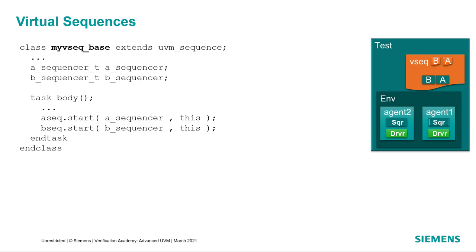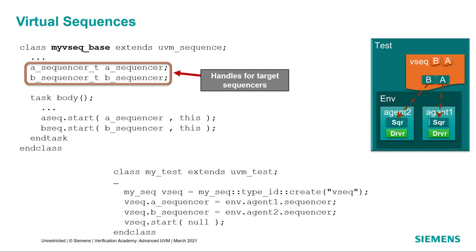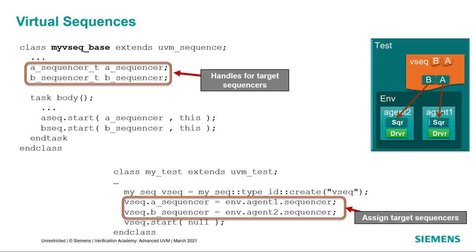Our base virtual sequence type — here we'll call it MyVseqBase — will simply be extended from the UVM sequence type. It will contain handles to the two sequencers on which the sequences will execute. From the test, before we run that virtual sequence, we need to initialize it and set up the sequencer pointers — we have to tell it exactly which sequencers it's going to run on. We do this from the test because the test knows the layout of our environment. Then we start that sequence. A virtual sequence does not start on a sequencer, so when we call start on the virtual sequence, we pass in the null handle to indicate that it's not running on any particular sequencer.